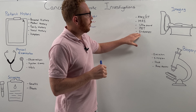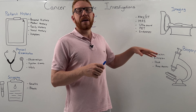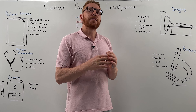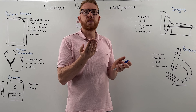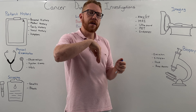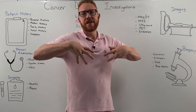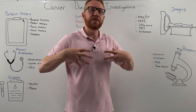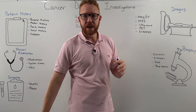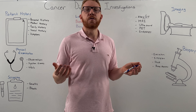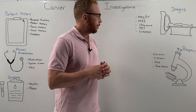Endoscopy involves scoping — we can put a scope down into the stomach, or into the chest and lungs via bronchoscopy, or come up through the colon in a colonoscopy.